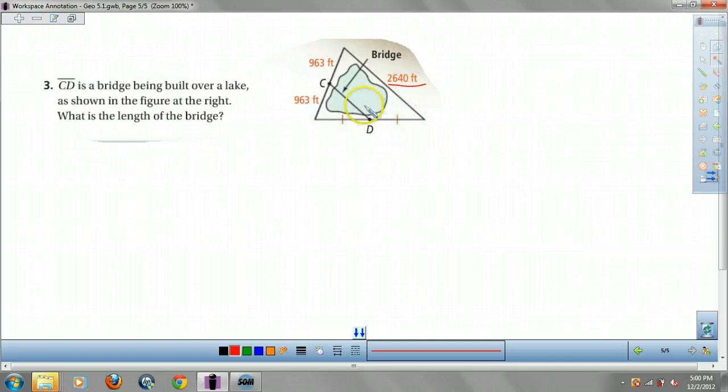2640, you see this D is the midpoint, C is the midpoint, so it's a midsegment. Midsegments are half the opposite side, so it's going to be one half 2640, which is going to be 1320 feet.